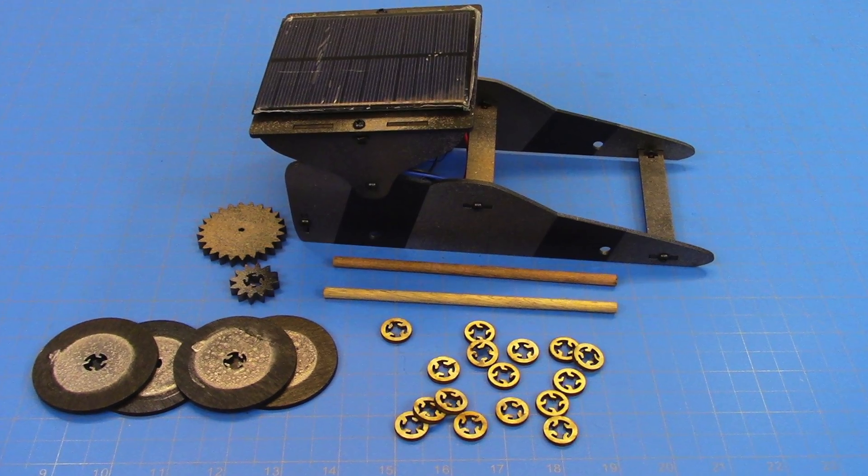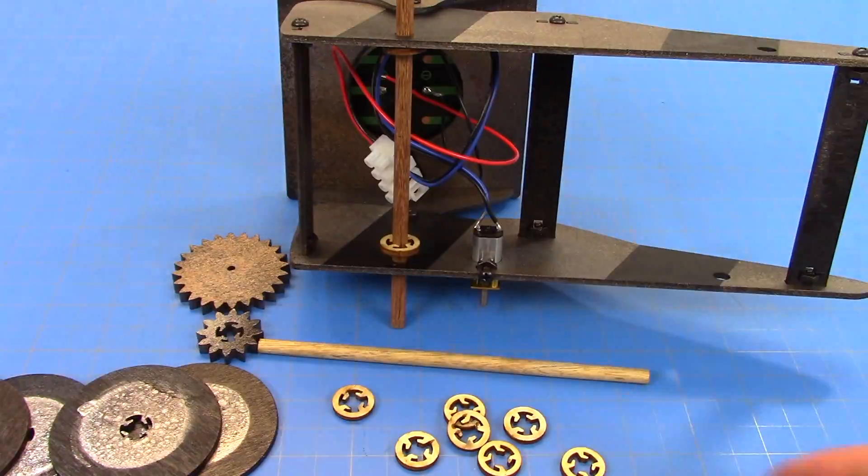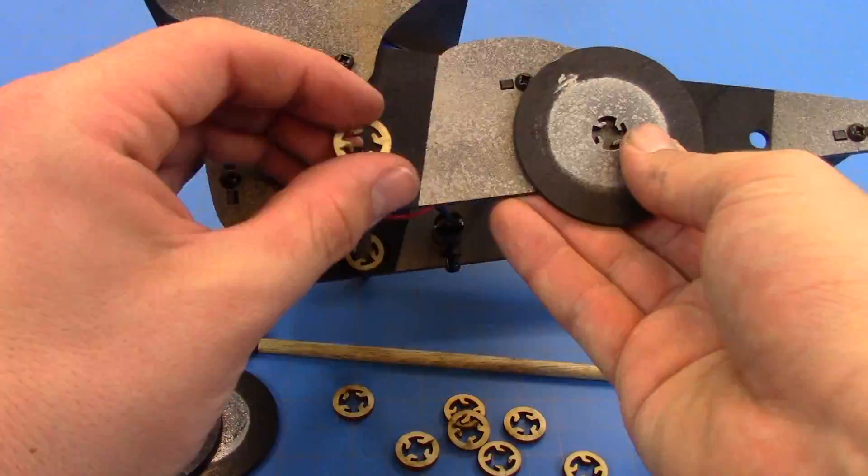The last part we need to assemble is the axles, wheels, and gears. Note that the spacers go both inside and outside of the chassis, and inside and outside of the wheels.